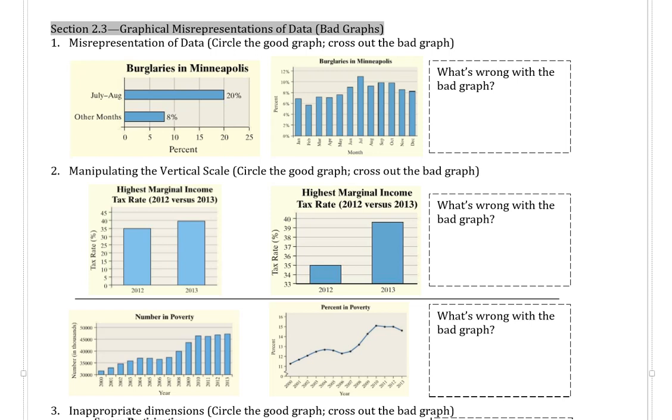For the first one, we have burglaries in Minneapolis. Note that in all these cases each pair of graphs is supposed to be representing the same information. The first one we have July to August about 20% of burglaries and then for other months 8% for this horizontal bar graph. Then for the vertical bar graph we have every single month with percentages given on this axis here. Of the two, the bad graph is the first one.